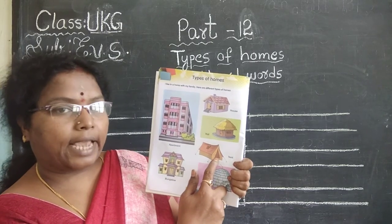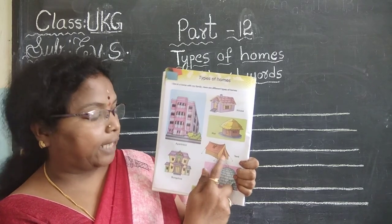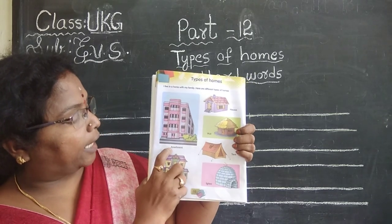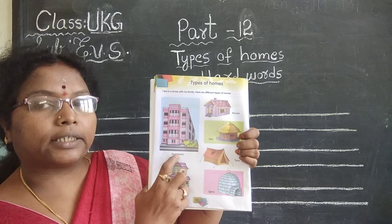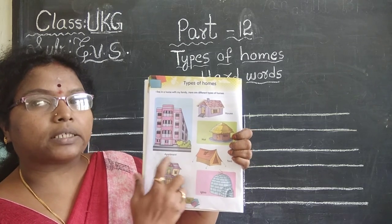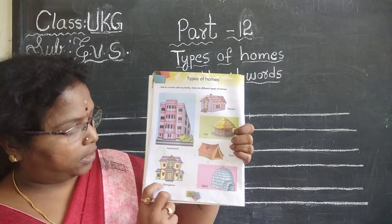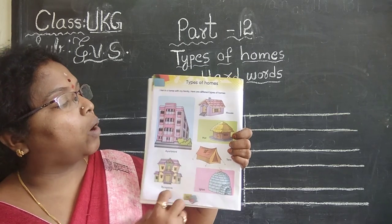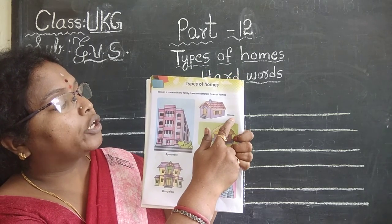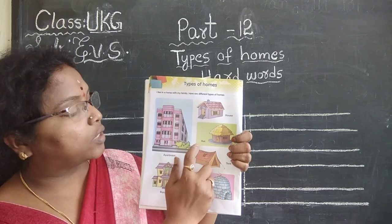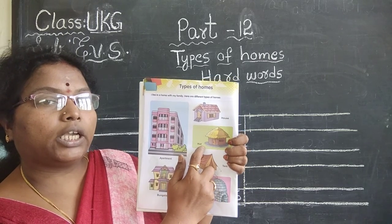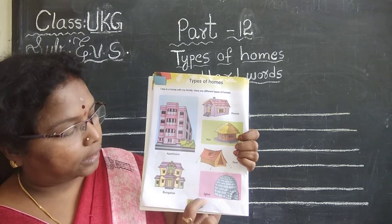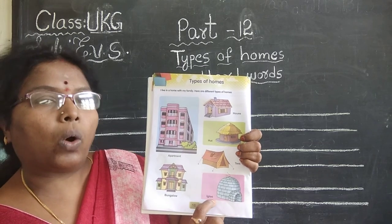Start reading the spellings. A-P-A-R-T, apart. M-E-N-T, meant. Apartment. B-U-N-G-A, L-O-W. Bungalow. H-O-U-S-E. House. H-U-T. Hut. T-E-N-T. Tent. I-G-L-O-O. Igloo. These are what we call hard words. Hard words we are going to write today.